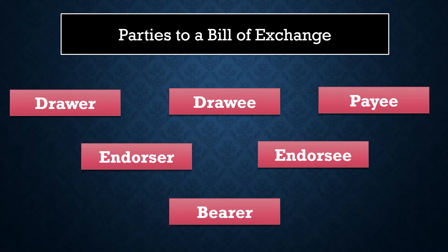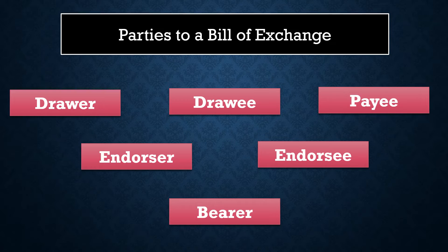Bearer — sometimes, instead of mentioning the name of the payee, the drawer can mention the bearer of the document. The drawer may prepare the document as 'pay a certain amount to the bearer of the document.' At that time, the drawee has to pay money to the bearer of the bill of exchange. Bearer is the person who is holding the document at a particular time.